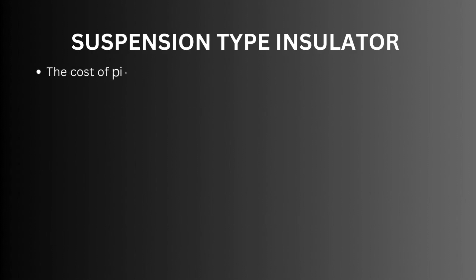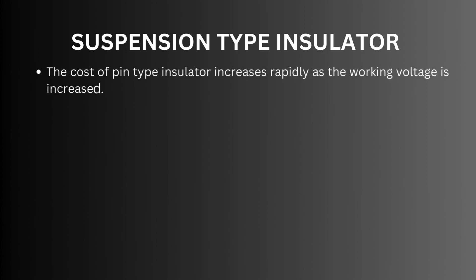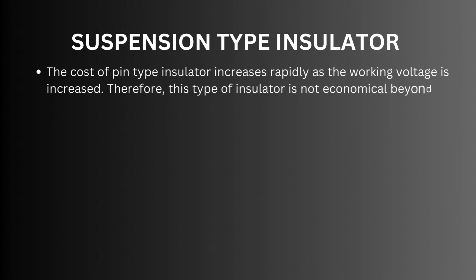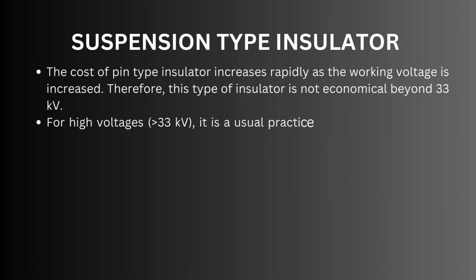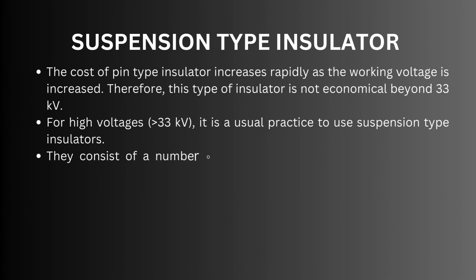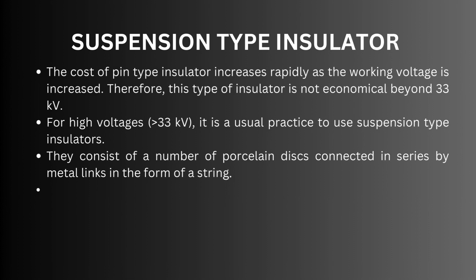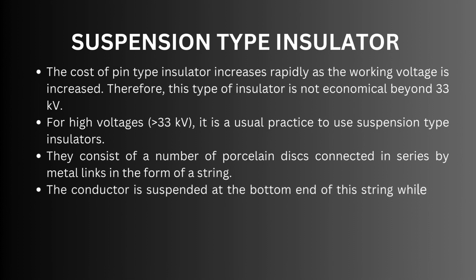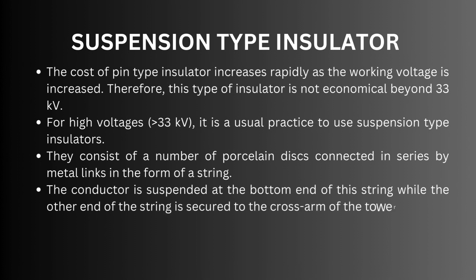Suspension type insulator: the cost of pin type insulator increases rapidly as the working voltage is increased, making it uneconomical beyond 33 kilovolts. For high voltages greater than 33 kilovolts, it is usual practice to use suspension type insulators. They consist of a number of porcelain discs connected in series by metal links in the form of a string. The conductor is suspended at the bottom end of this string while the other end is secured to the cross arm of the tower.